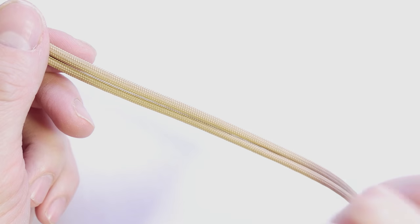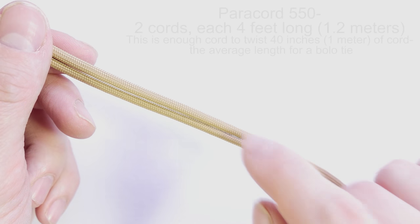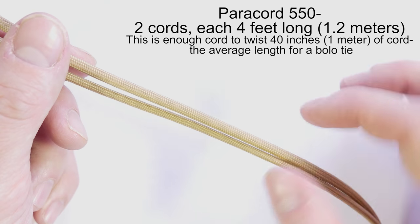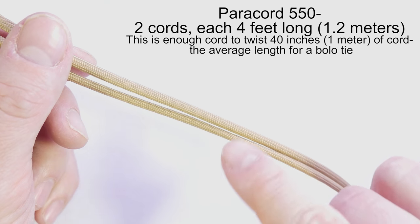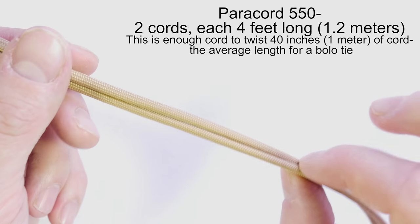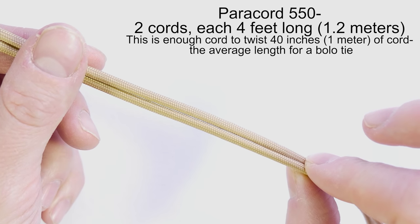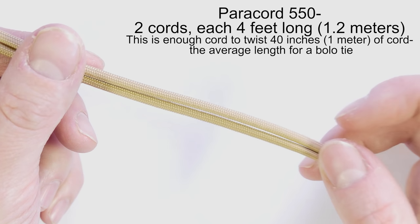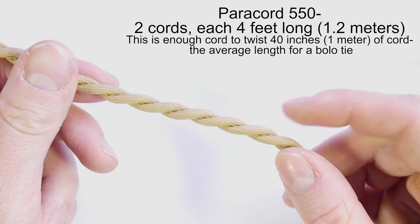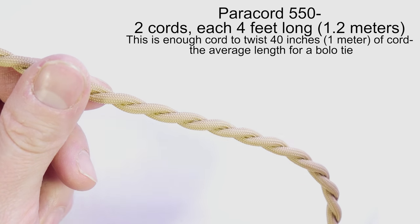The supplies for making the bolo tie are the following. Two pieces of paracord 550. These are 4 feet long each. This is going to allow you to make 40 inches of the bolo tie. This is the usual length. These two pieces are going to be twisted into a single piece of cord later on.